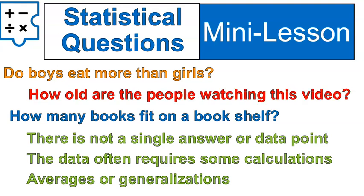How old are the people watching this video? You would have to gather the data for everyone watching this video and then take an average of their age, and you'd be able to make some kind of statement — the average age is this. But it has to be more defined. You have to gather a bunch of changing data points, make some averages or generalizations, and basically make some conclusions.